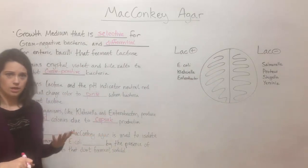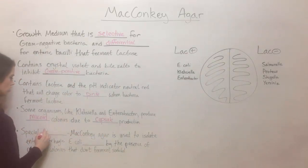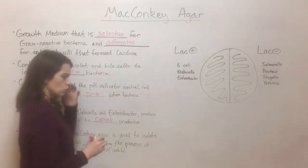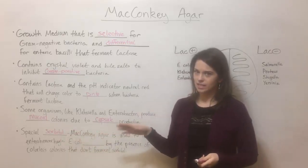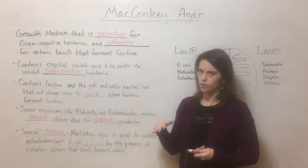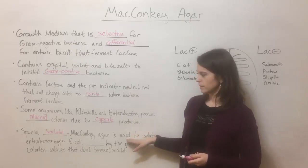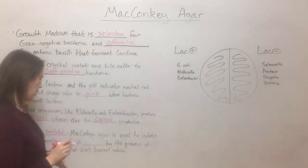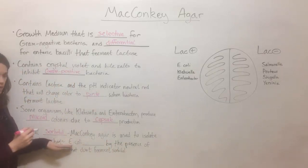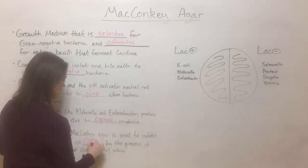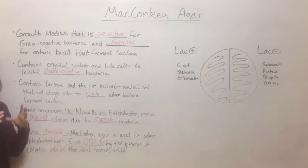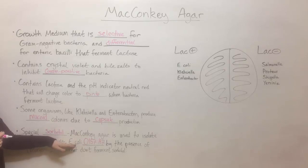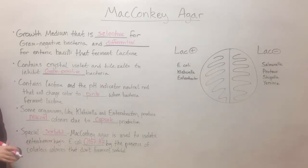There is a special type of MacConkey agar called Sorbitol MacConkey agar. Sorbitol is a sugar alcohol, a type of carbohydrate. Sorbitol MacConkey agar contains additional selective components that will inhibit the growth of certain things but allow the growth of a specific kind of E. coli. Specifically, it is Enterohemorrhagic E. coli, the strain known as O157:H7. These are serologic identifications where the strain has certain kinds of surface proteins. This type of E. coli is known for being Enterohemorrhagic — causing bleeding in the gut — and is a really nasty kind of food poisoning.